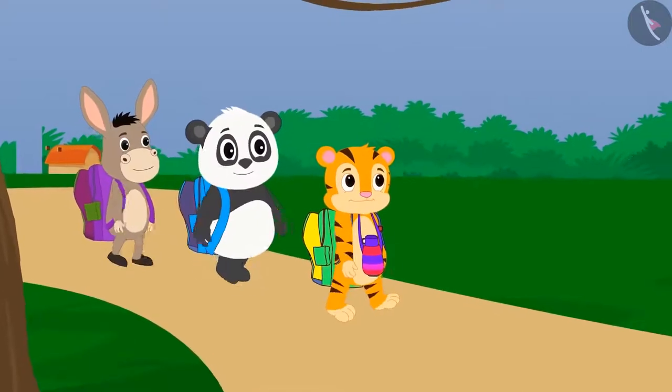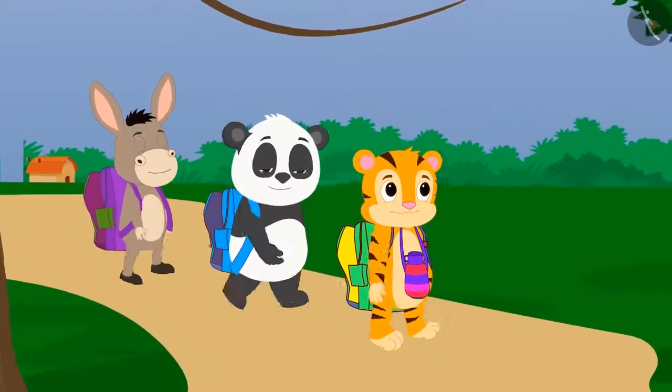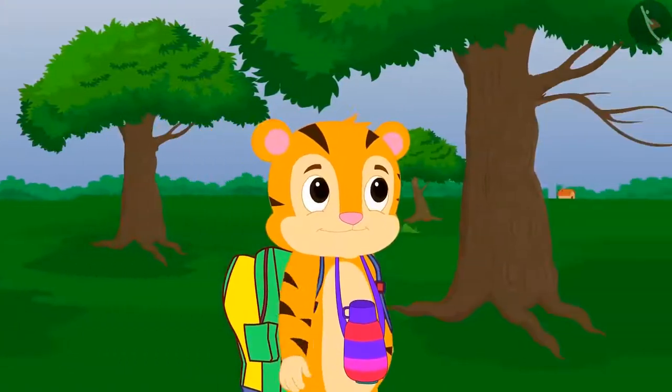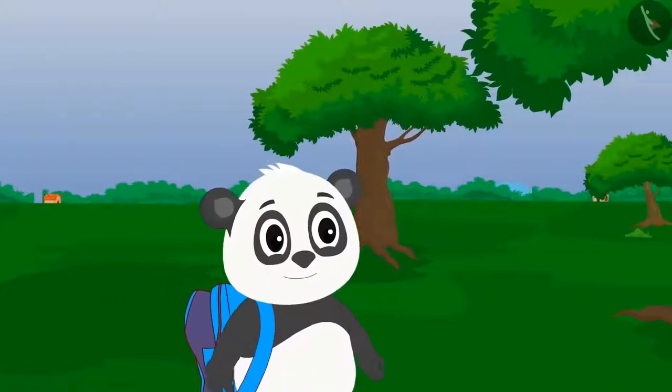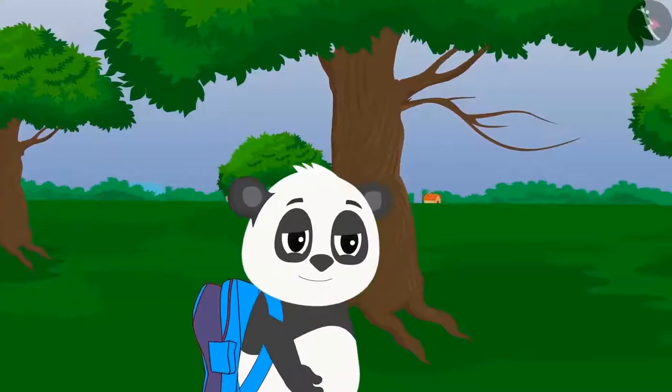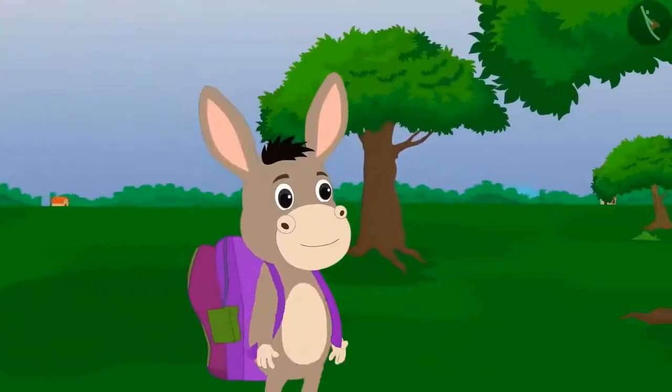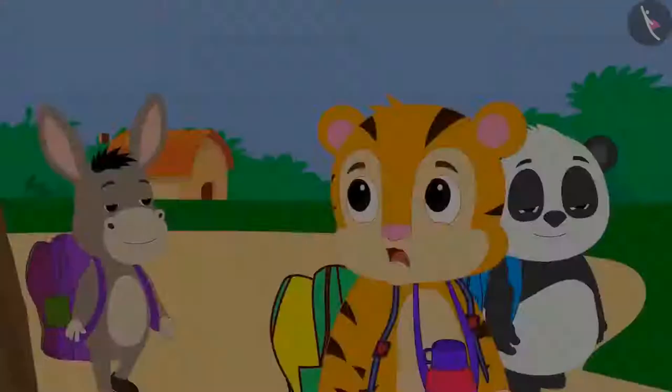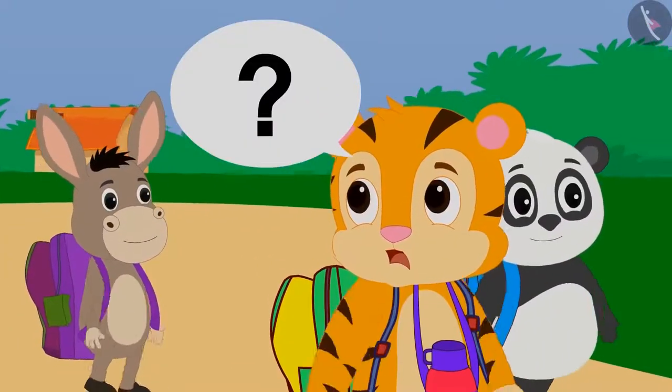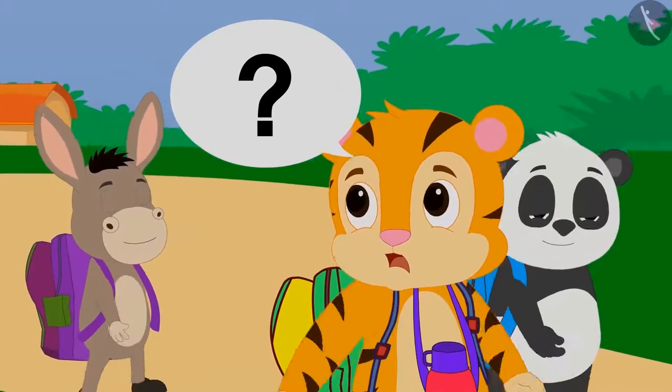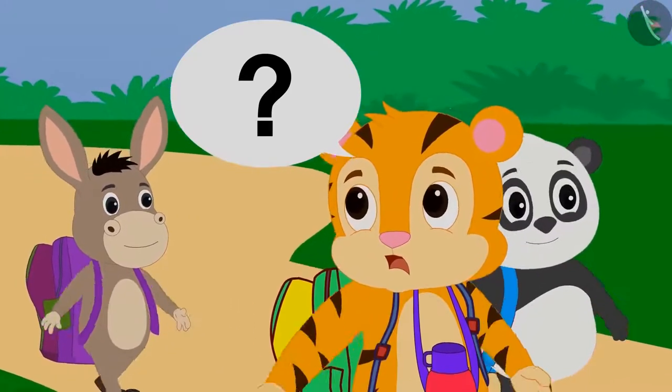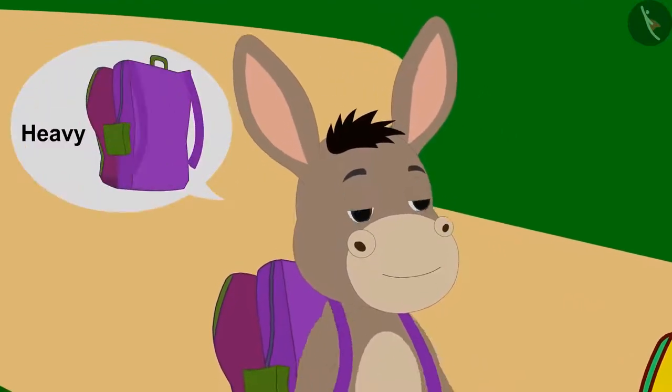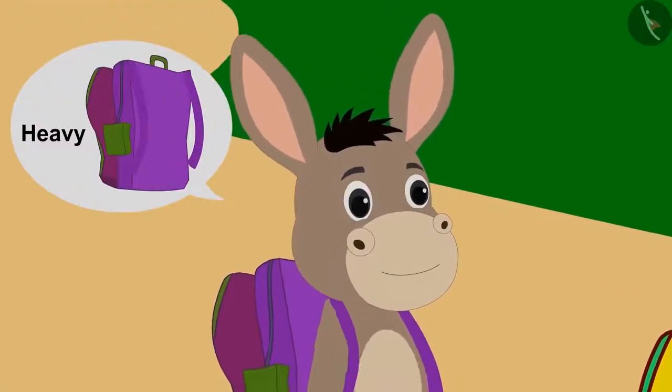Bhola, Golu and Sher Khan are returning from school. Sher Khan is walking fast. Golu is a little behind him and Bhola is following them both. Sher Khan asks Bhola why is he moving so slowly? Then Bhola told him that his bag is the heaviest.